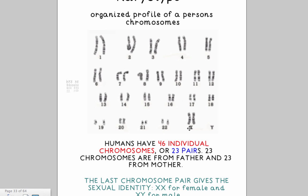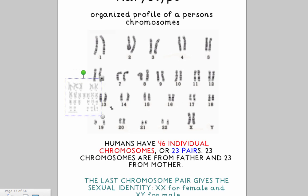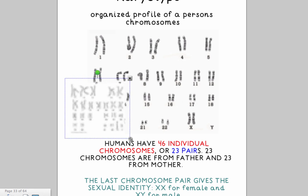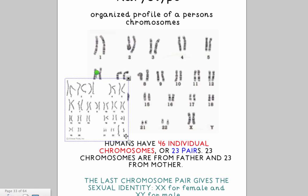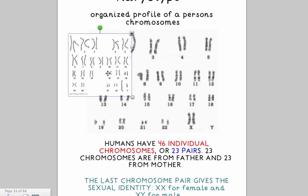Here you can see that this individual has two X chromosomes — this will be a female. A male shows up having one X and one Y chromosome.